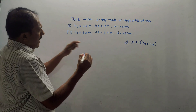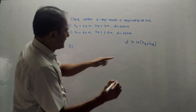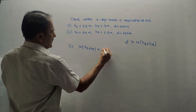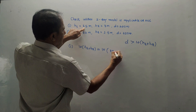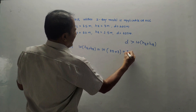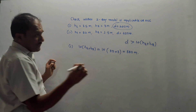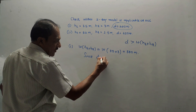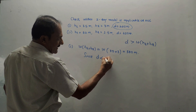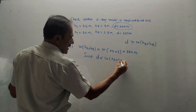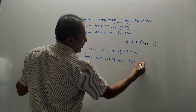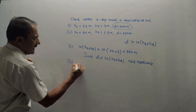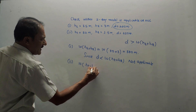First case: we need D greater than 10 times (HT plus HR). Calculating: 10 times (35 + 3) = 380 meters. The given distance is 250 meters. Since D is less than 10 times (HT plus HR), the two-ray model is not applicable.